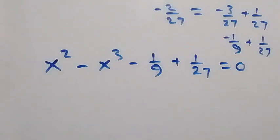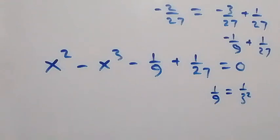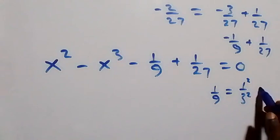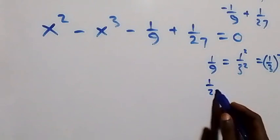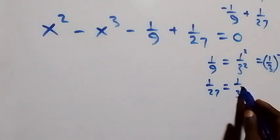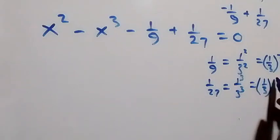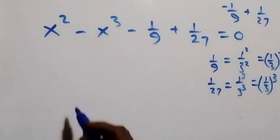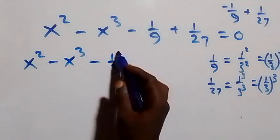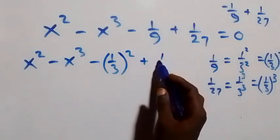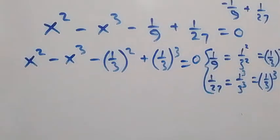From what we have, 1 over 9 is the same as 1 over 3 squared, and 1 over 27 can be written as 1 over 3 raised to power 3. Also 1 can be written as 1 raised to power 3, which is 1 over 3 cubed. So this equation becomes x squared minus x cubed minus 1 over 3 squared plus 1 over 3 cubed equals to zero.